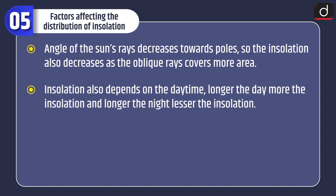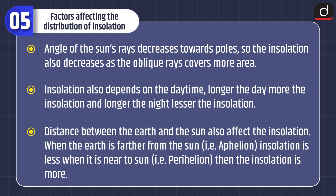Moving on to the factors affecting the distribution of insolation: the angle of the sun's rays decreases toward the poles, so insolation also decreases because oblique rays cover more area. Insolation also depends on the length of daytime — longer the day, more the insolation; longer the night, lesser the insolation. Distance between the earth and the sun also affects insolation: when the earth is farther from the sun (aphelion), insolation is less; when it is nearer to the sun (perihelion), insolation is more.